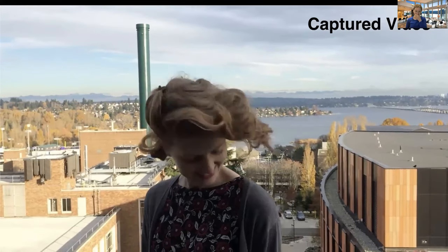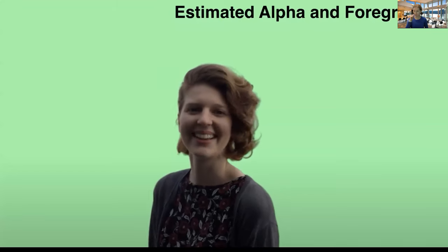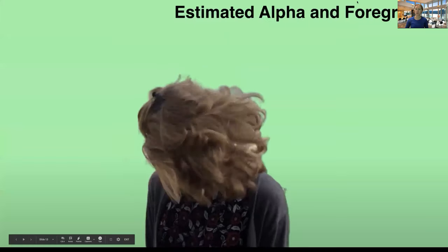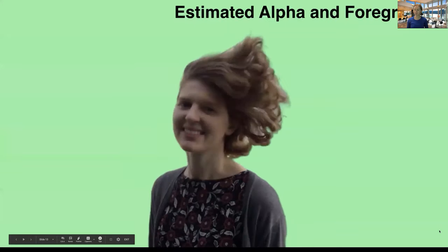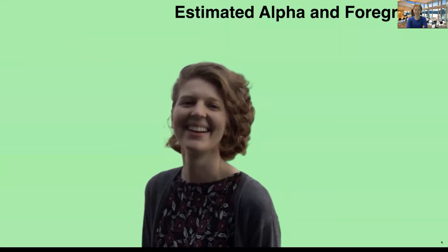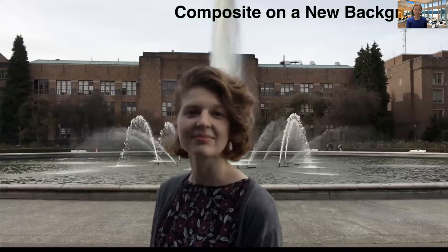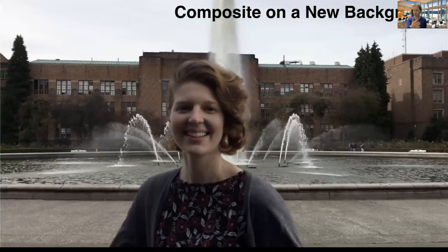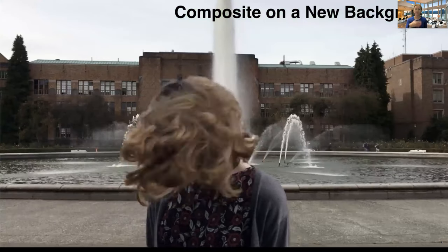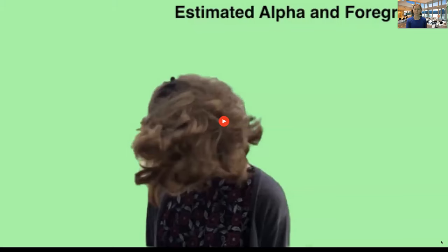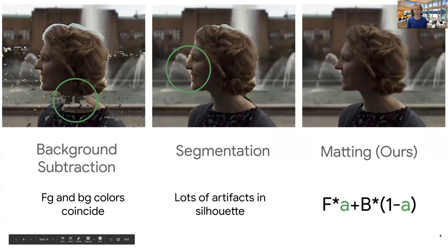Let's take a look at a few more examples. This is the captured video and then here's our result. When I show our result, I show estimated alpha and foreground where we talk about alpha if we're not familiar with the terms in a second. So given that we can estimate the foreground, which is the human and the alpha, we can put any background behind her and it will look realistic.